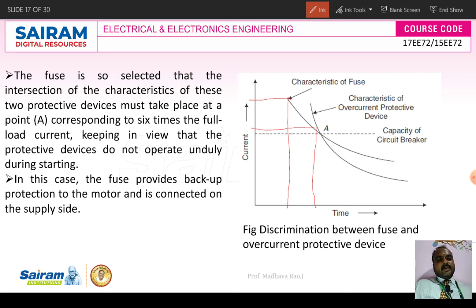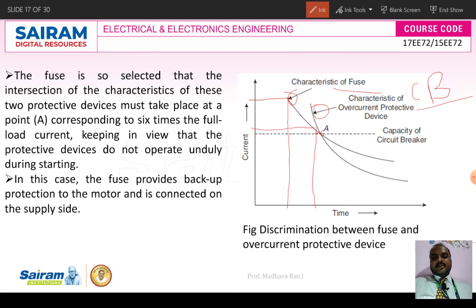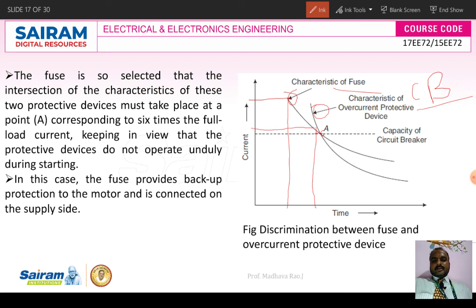The characteristics of over-current protective devices show the second part — an over-current device like a circuit breaker and a fuse. The fuse melts first and the circuit breaker operates second. The fuse is selected so that the intersection of the characteristics of these two protective devices must take place at a point corresponding to six times the full load current. So when the full load current exceeds six times, we choose the appropriate fuse and circuit breaker.